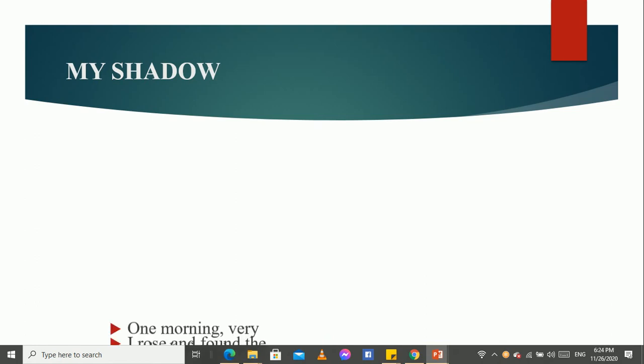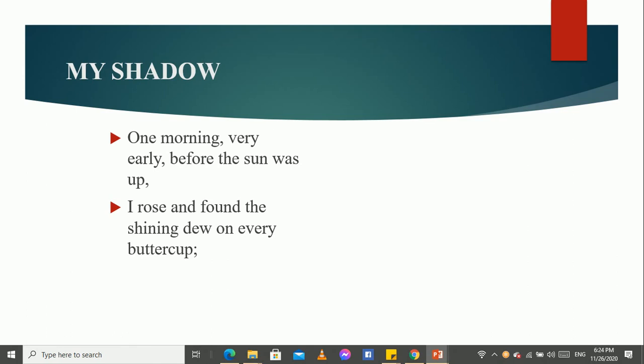So, by listening to this, one morning, very early before the sun was up, I rose and found the shining dew on every buttercup. One morning, means in the winter season, the dewdrops fall. So, when we can see that when the dewdrop falls, it falls upon every part of the ground, and the flowers, and the trees, and the leaves.